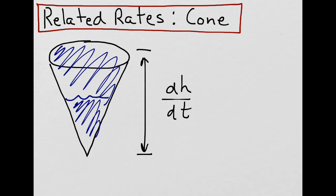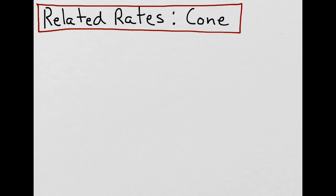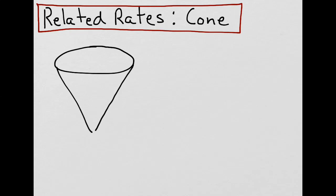To determine this, we could do a little hands-on activity. We could take a drinking cup from a water cooler, which is in the shape of a cone, and measure its height and measure its radius. And let's say we found out that the radius was 3.5 cm and the height was 10 cm.